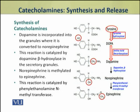Dopamine is incorporated into the granules where it is converted into norepinephrine. The enzyme that converts dopamine to norepinephrine is present inside the secretory granules, and this enzyme is called dopamine beta-hydroxylase. Therefore, the conversion of dopamine to norepinephrine occurs inside the granules.